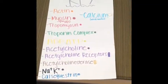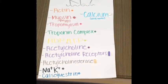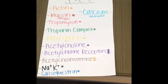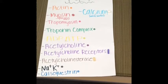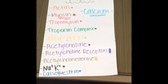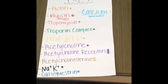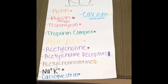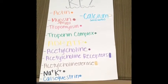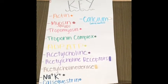This is our key. Actin will be represented by an orange bead. Myosin will be represented by a red skittle as well as red clay. Tropomyosin will be represented by a pink bead. Troponin complex will be represented by a green bead. ADP and ATP will be represented by a yellow bead.